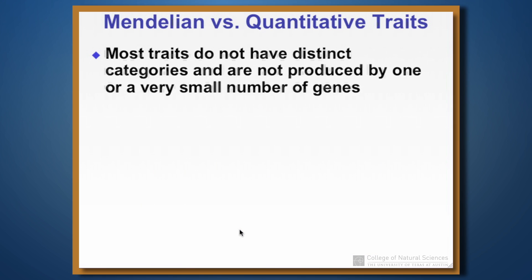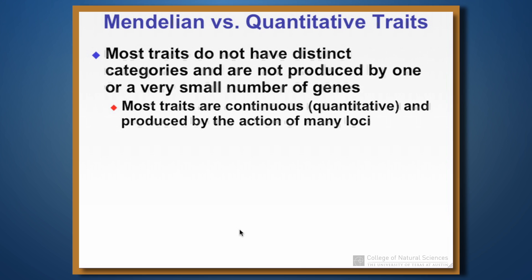For quantitative traits, and this is true of most traits that we would want to talk about, they don't have distinct categories. They don't end up being produced by one or a very small number of genes. Instead, they're produced by the action of many, many loci acting in combination, and this is what gives them their continuous variation.